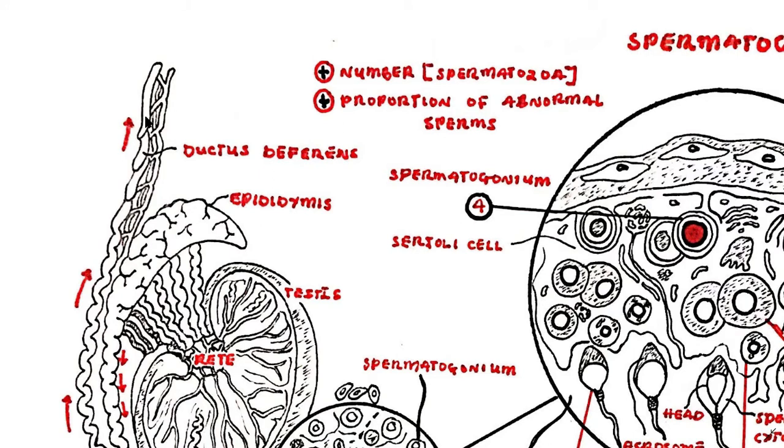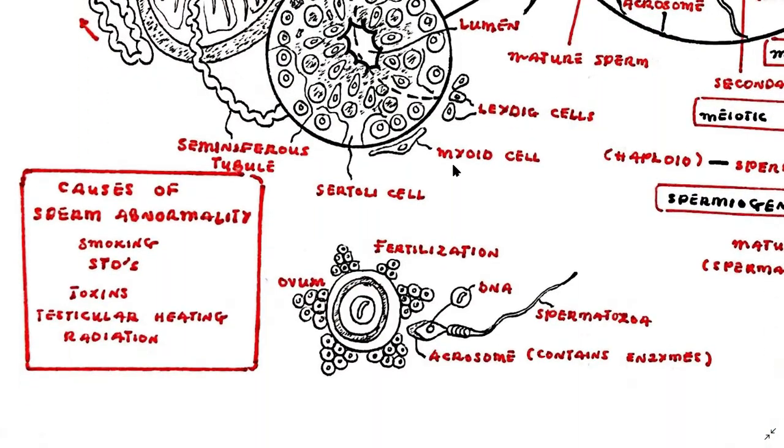Abnormalities in spermatozoa are common. During fertility investigations the number and concentration of spermatozoa and the proportion of abnormal sperm are counted in a seminal sample. A number of biological and environmental factors are responsible for abnormalities such as smoking, sexually transmitted diseases, toxins, testicular overheating and radiation.